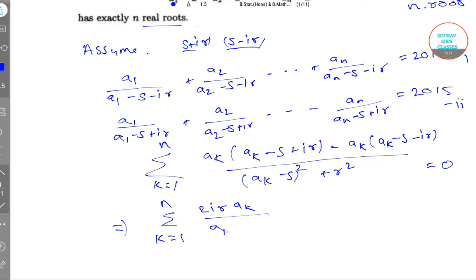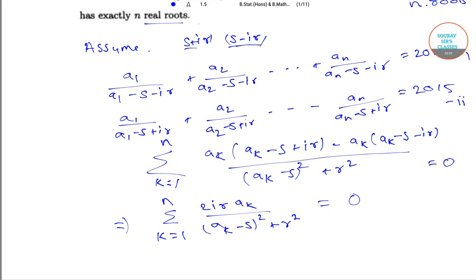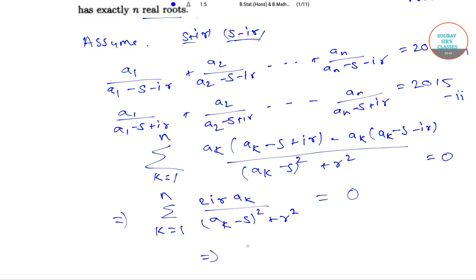Now taking 2ir outside we will have, this implies 2ir summation k equals 1 to n, ak divided by ak minus s square plus r square equals 0.